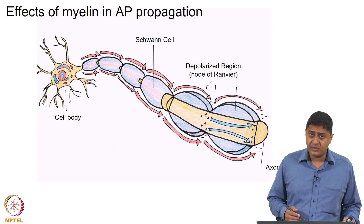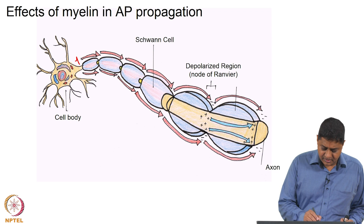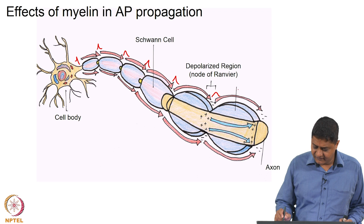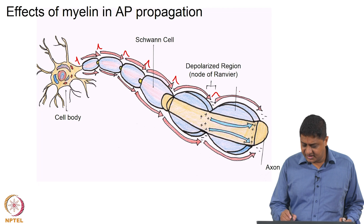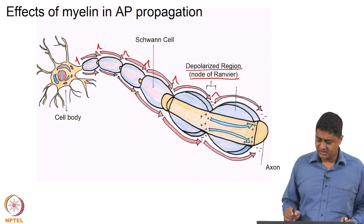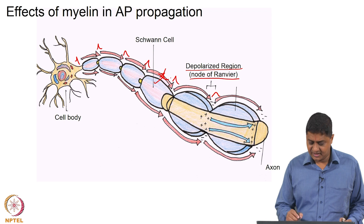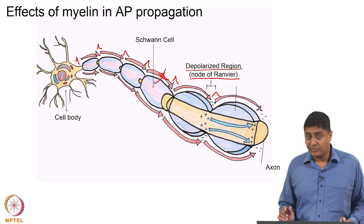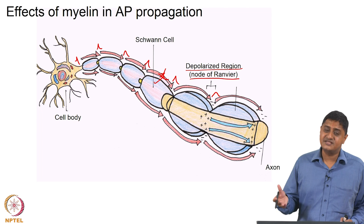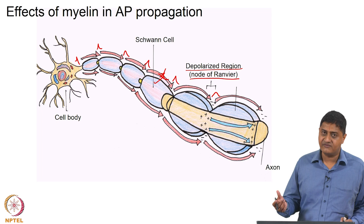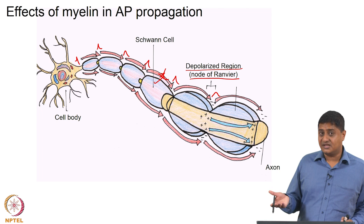What does this do to action potential propagation? When an action potential is generated it jumps between nodes of Ranvier through saltatory conduction. The depolarized region is only present at the nodes of Ranvier. Ions cannot escape through the myelin, so they must diffuse through and cause depolarization at the next node of Ranvier. There is also an increased density of voltage-gated sodium and potassium channels at the nodes of Ranvier compared with the rest of the membrane, increasing the probability of an action potential at the node.